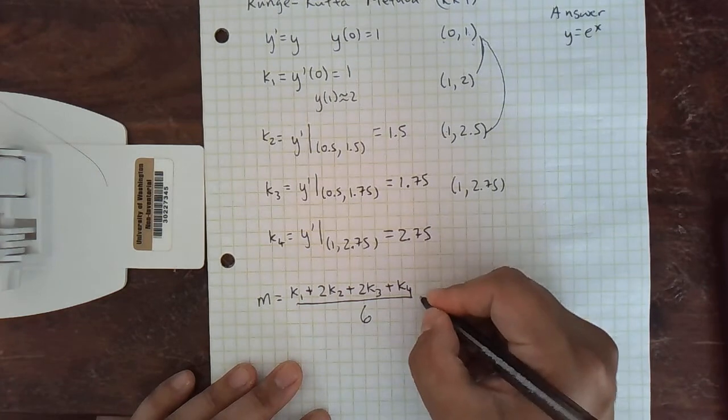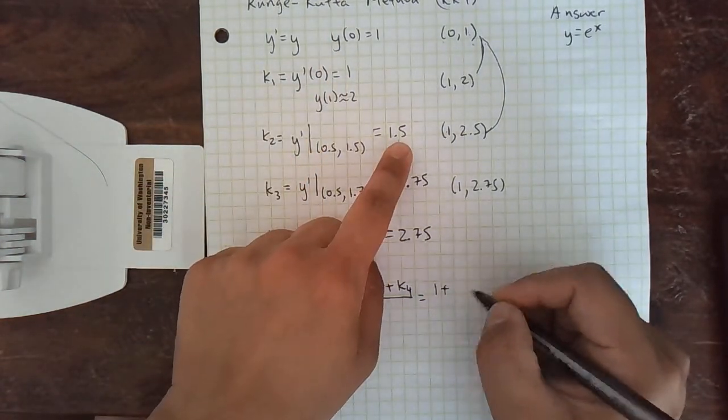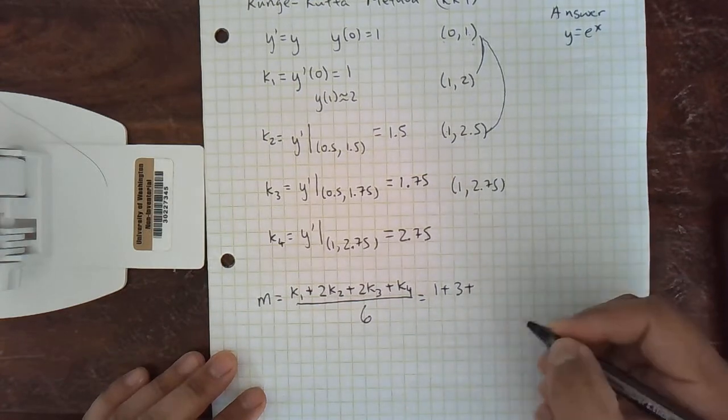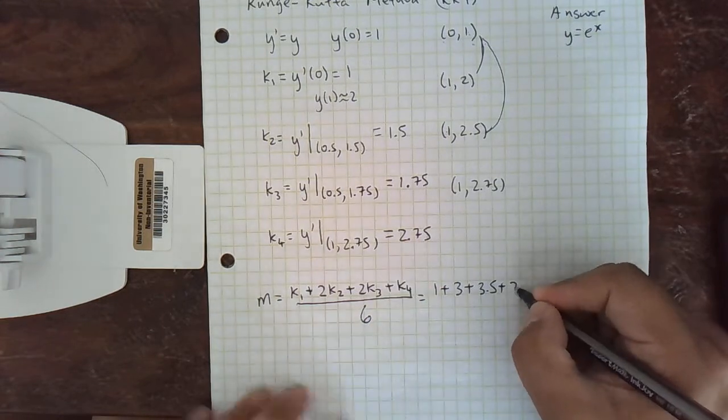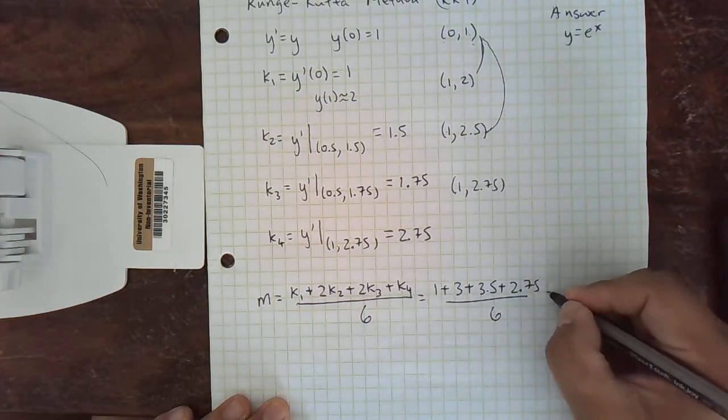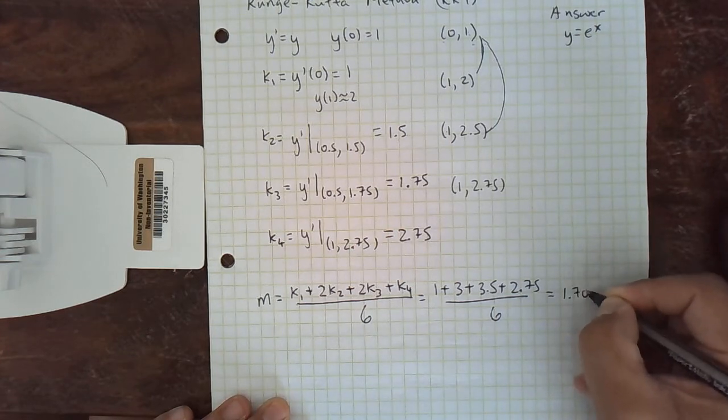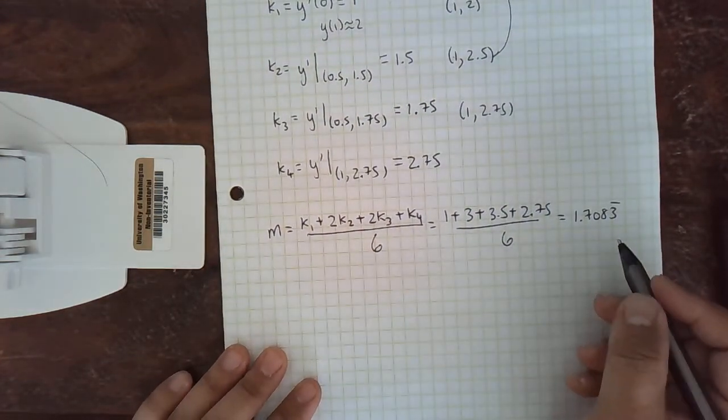So putting in our numbers, we get k1 was 1. Two times k2, k2 was 1.5. So two times that is 3. Two times 1.75 is 3.5. And then just 1 times k4 all over 6 is going to be 1.7083 repeating. I'm putting in decimal form so we can compare.